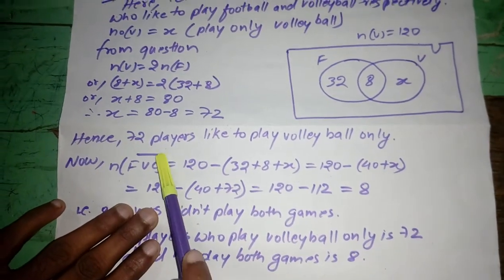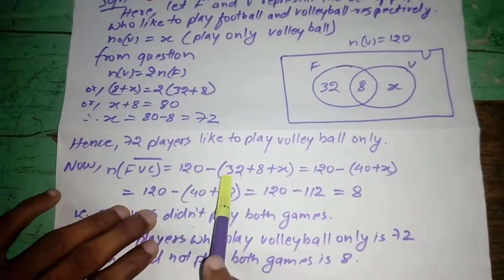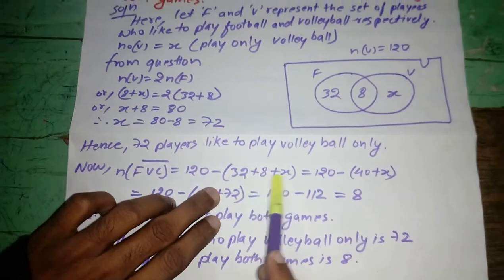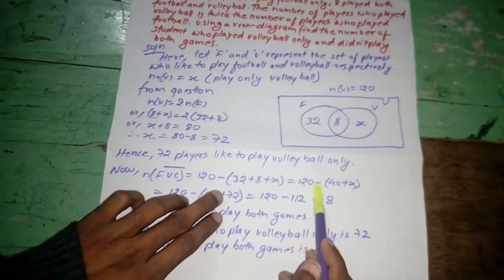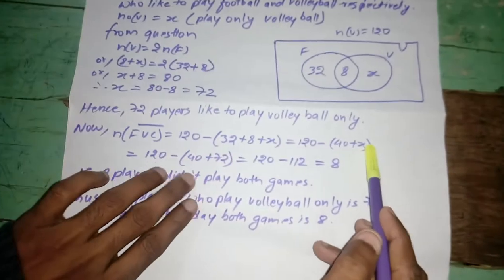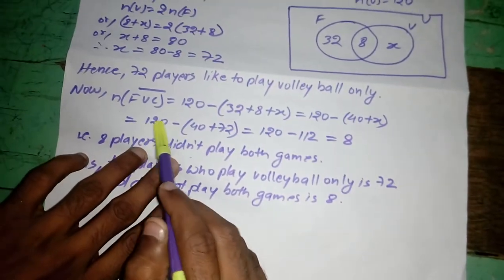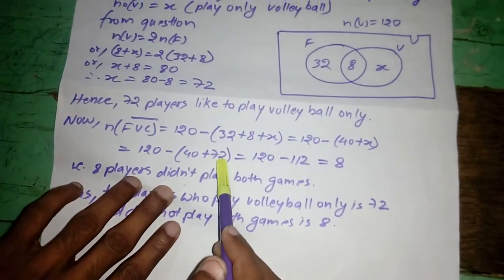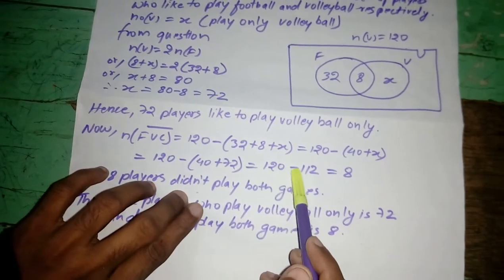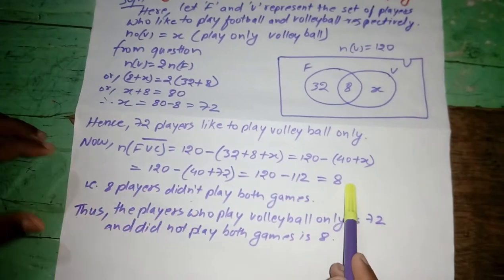Now, n(F union V) complement is equal to 120 minus (32 plus 8 plus X) is equal to 120 minus (40 plus X) is equal to 120 minus (40 plus 72) is equal to 120 minus 112 is equal to 8.